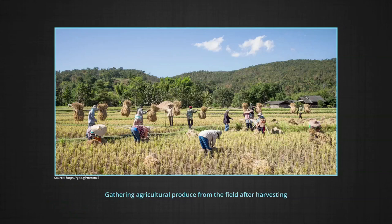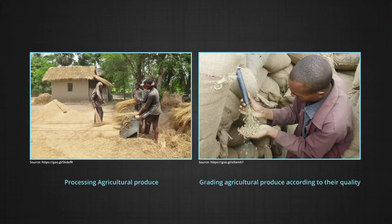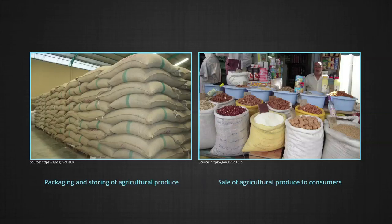Farmers often fail to get a fair price for their produce. Moreover, farming in India is very uncertain because of dependence on monsoons, and most farmers live at a subsistence level. Agricultural marketing is not simply the sale of produce but also involves gathering after harvesting, processing, grading according to quality, packaging according to buyer preferences, storing for future sale, and selling when better prices are obtained. So it is a total process.